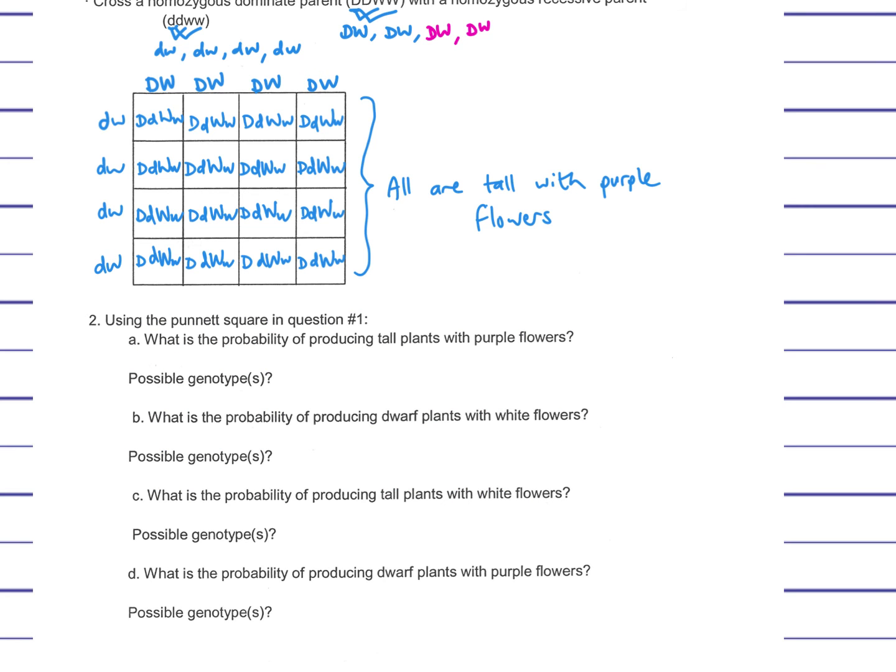And now you just use your Punnett Square to answer the question. What are the probability of producing tall plants with purple flowers? That is 100%, because all of these individuals have a big D and a big W in it. What is the probability of producing a dwarf plant with white flowers? Zero. There are none. What is the probability of producing a tall plant with white flowers? Zero percent. And the probability of producing a dwarf plant with purple flowers? Again, zero percent.